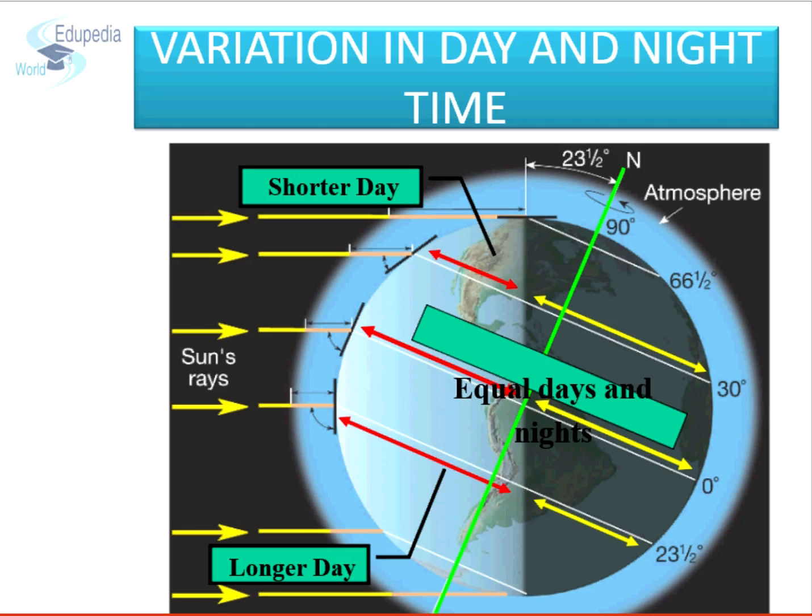But as we move away from the equator in the northern hemisphere, the days are getting shorter while the nights are getting longer. And the places beyond 66.5 degrees north are not facing sun at all and are experiencing complete night.